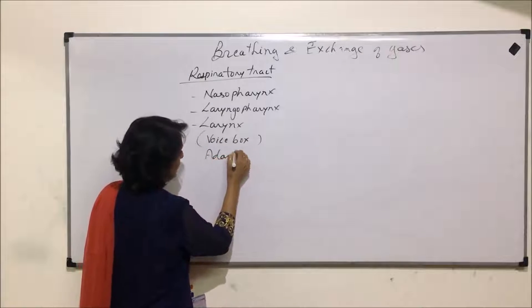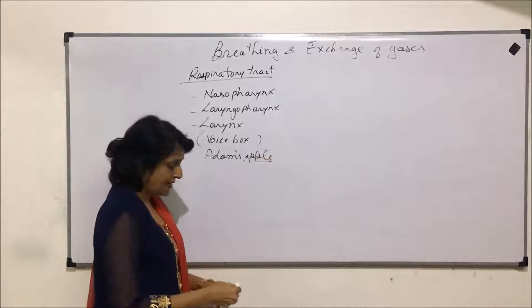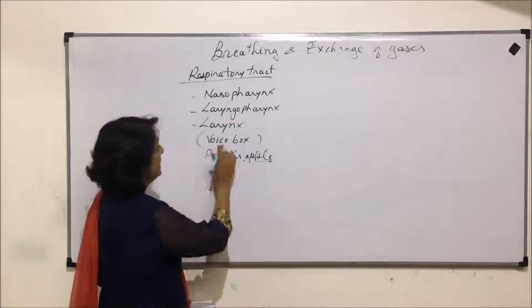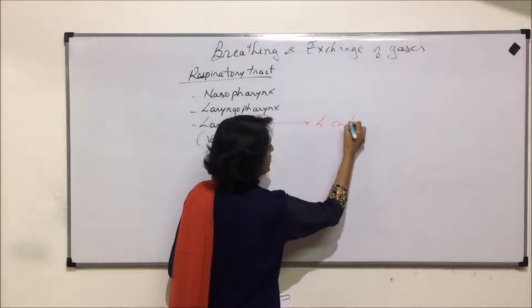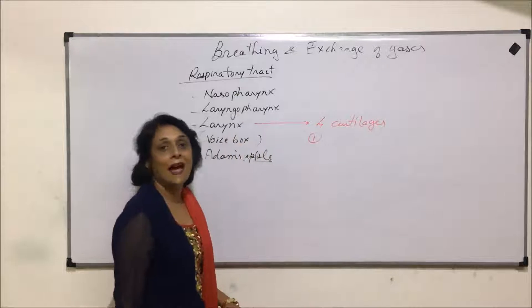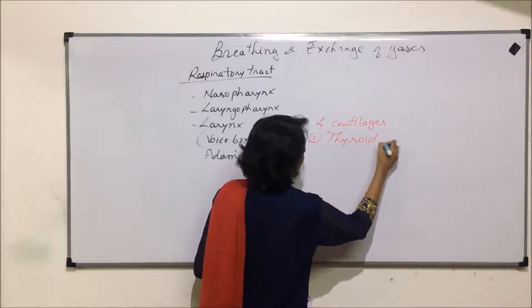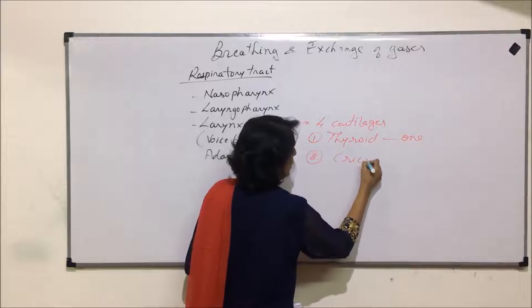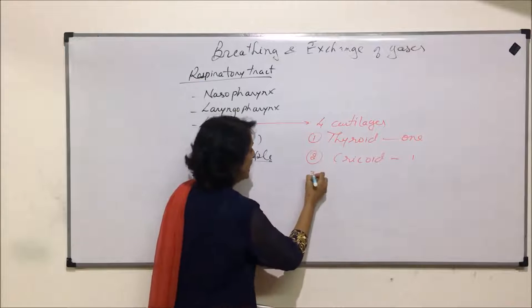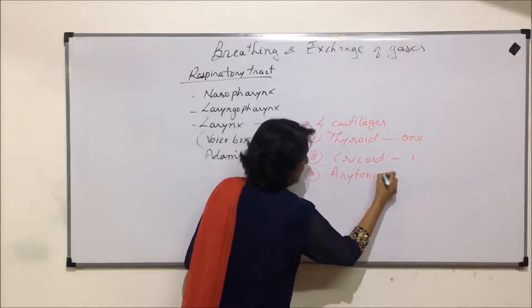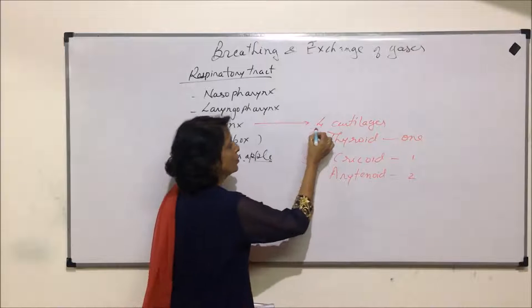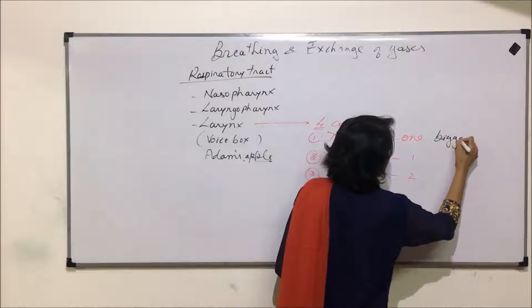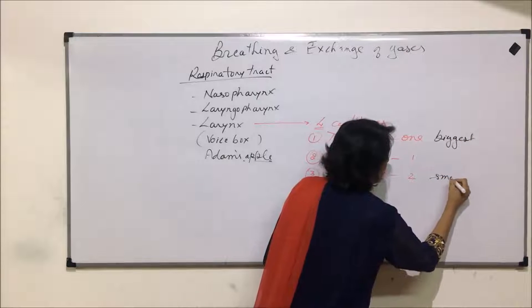To understand the structure, let us first look at what the larynx is made up of. The larynx is made up of four cartilages: one thyroid cartilage, one cricoid cartilage, and two arytenoid cartilages — making a total of four. The thyroid cartilage is the biggest, and the arytenoid cartilages are the smallest.